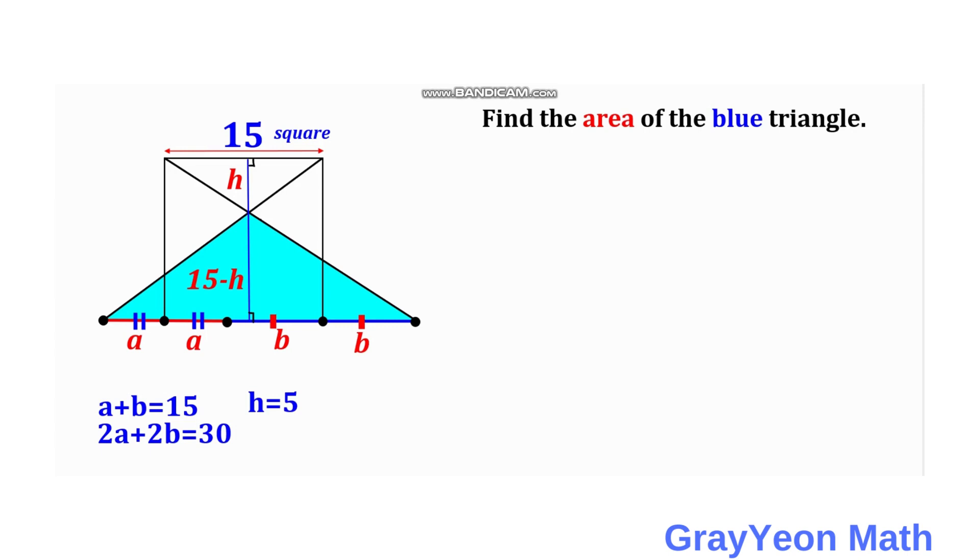And since we are interested in finding the area of the blue triangle, then we have to find 15 minus H is equal to 15 minus 5. And that is 15 minus H is equal to 10 units.